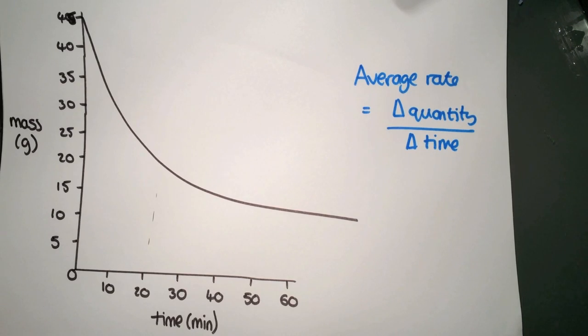The other way that you could be asked to do an average rate is to read it from a graph. So here we have a graph which shows mass against time. And we've been asked to calculate the average rate. Again, we're using the same formula that we had before.